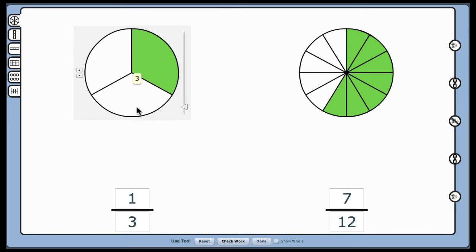Explain that when we're computing with fractions it's easier to do so when the fractions are partitioned into parts that are the same size, and therefore have the same denominators.